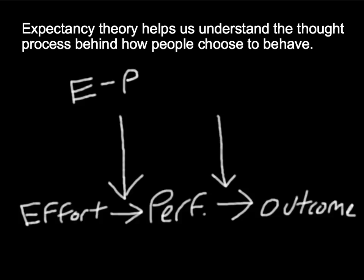The second expectancy occurs right here, and this is the performance, or P, to outcome expectancy, the P to O expectancy. This suggests that we come up with some sort of probability in our heads, thinking about whether or not we achieve that level of performance. Is that going to get us something that we value? So, if I do work really hard, and I'm studying for a test, and I do well on the test, is that going to get me an A in the course? Or, does it not matter at all?